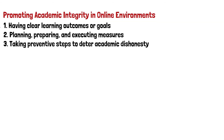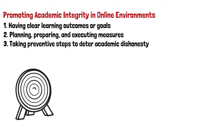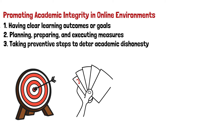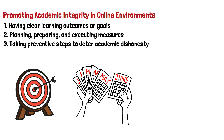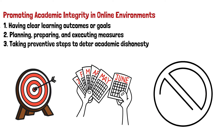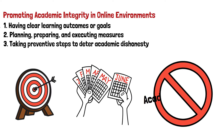Three strategies for promoting academic integrity are: having clear learning outcomes or goals; planning, preparing, and executing measures that promote academic integrity; and taking preventive steps to deter academic dishonesty.